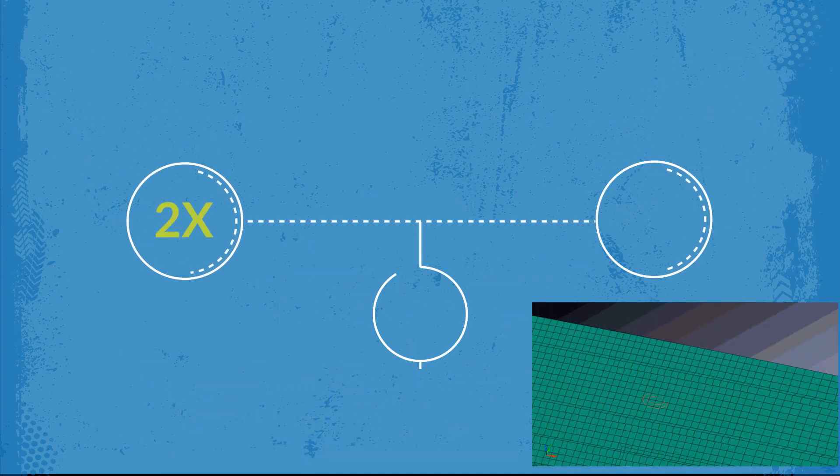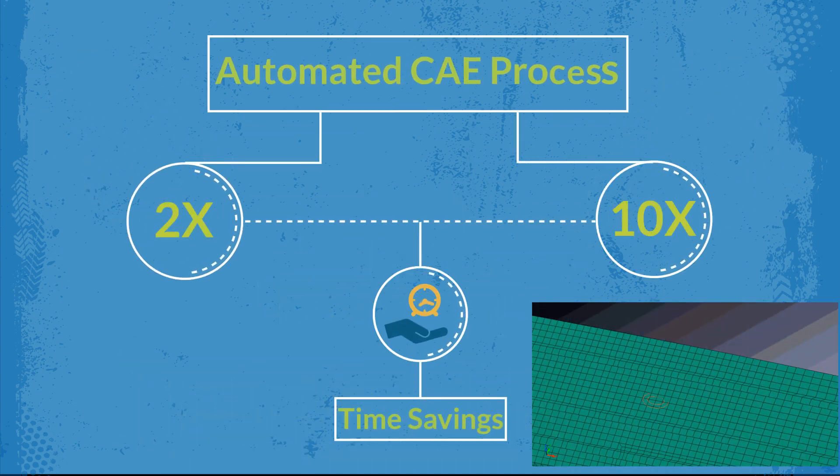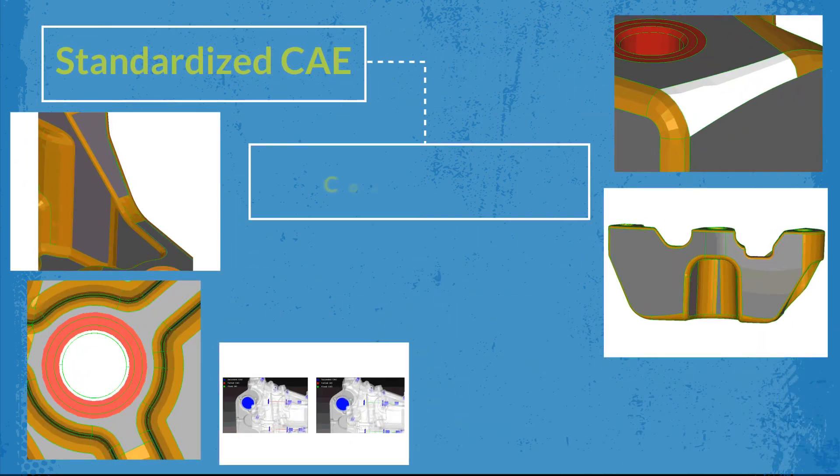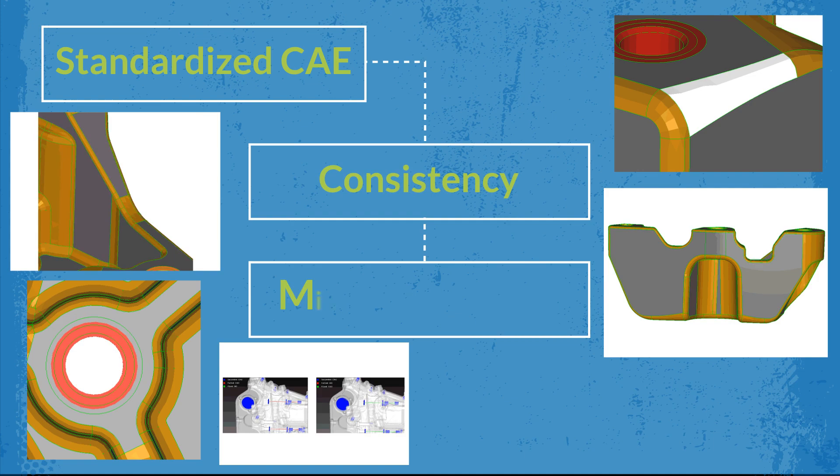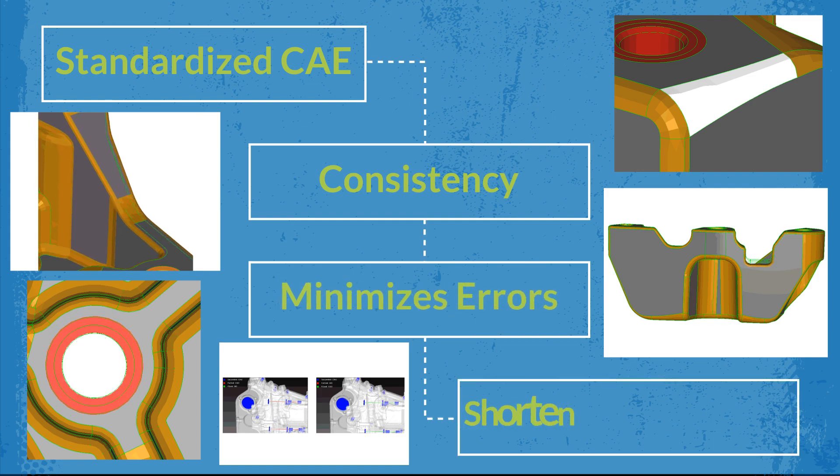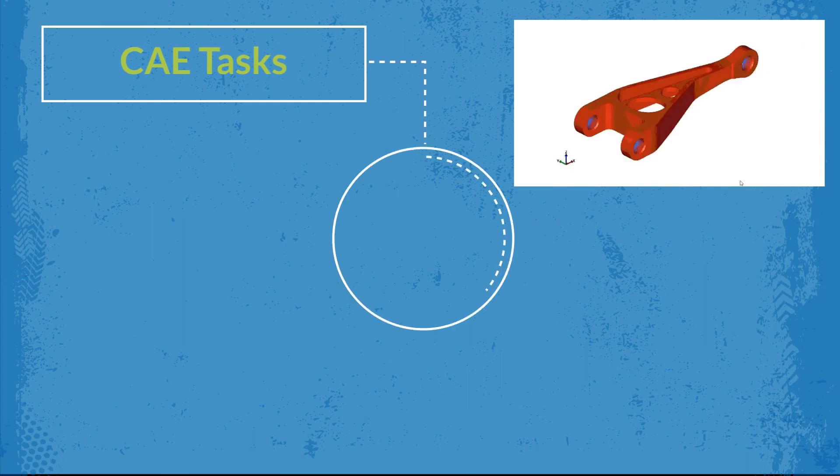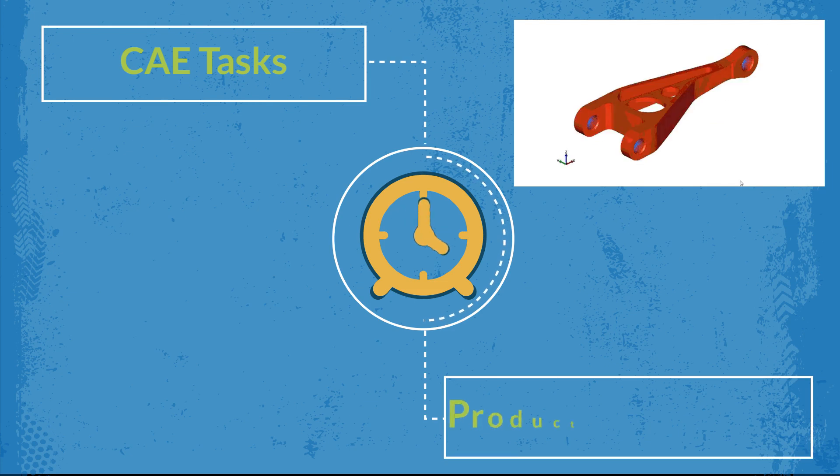Two times to ten times savings with CAE process automation, standardizing CAE processes which brings consistency, minimizes errors, reduces learning curve dramatically, giving ability to run all CAE tasks, scorecard items, within a short time window that is available during product development stages.